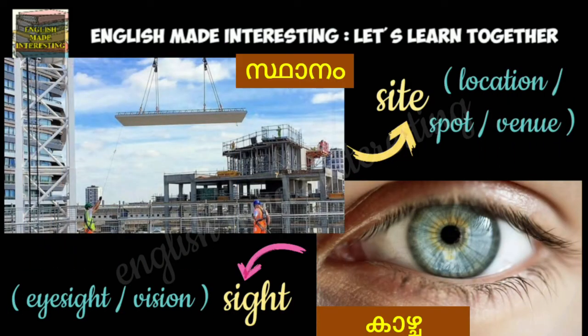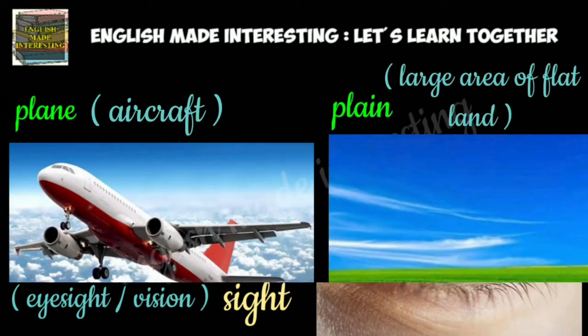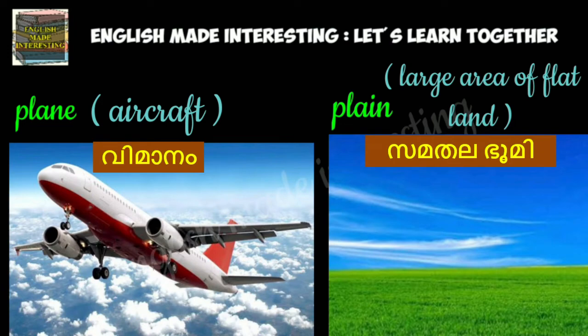Sight. S-I-G-H-T refers to the eyesight or vision. S-I-T-E, 'site', is the location, spot or a venue. Plane. P-L-A-N-E refers to the aircraft. P-L-A-I-N refers to a large area of flat land.